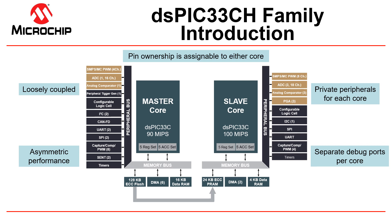Each core has its own program and data memory and peripheral bus with a dedicated set of peripherals. The main difference is that the master executes from 128 kbytes of program flash with error correction code, or ECC, while the slave core executes from program RAM with ECC. Executing from program RAM enables the slave core to run at a higher frequency.